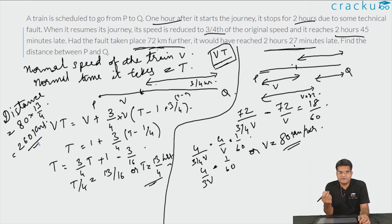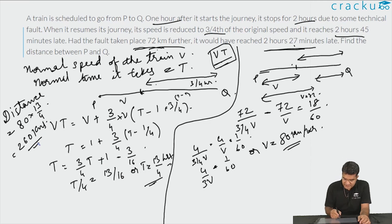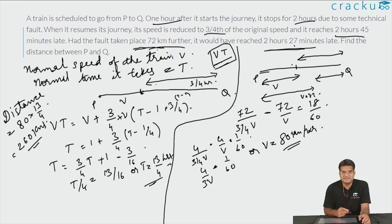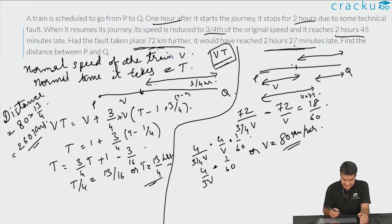We found the travel time using the first equation and the speed using the second equation — that if the fault had occurred 72 kilometres further, the train would have reached 18 minutes earlier. Multiplying the two gives the total distance of 260 kilometres.